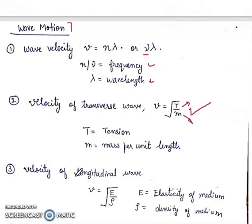Velocity of longitudinal wave: V = √(E/ρ), where E is the elasticity of the medium and rho (ρ) is the density of the medium.